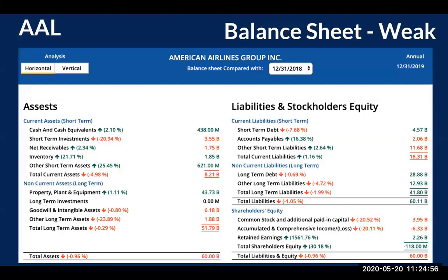A weak balance sheet doesn't mean the stock price won't grow. But as a fundamental investor, you have to be careful about position sizing and whether to buy a put for protection. If American Airlines hypothetically starts reducing that $10 billion short-term gap and the $9 billion long-term gap down to $2–3 billion, institutional investors will see those signs early and start buying — pushing the stock price up before the balance sheet report even comes out.